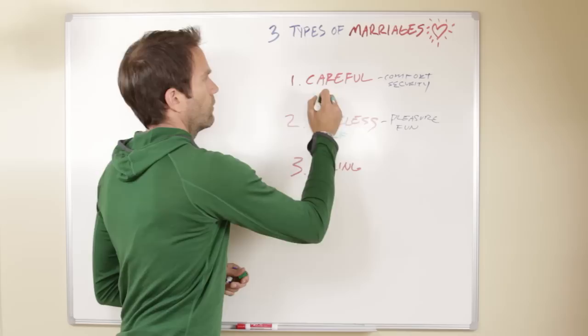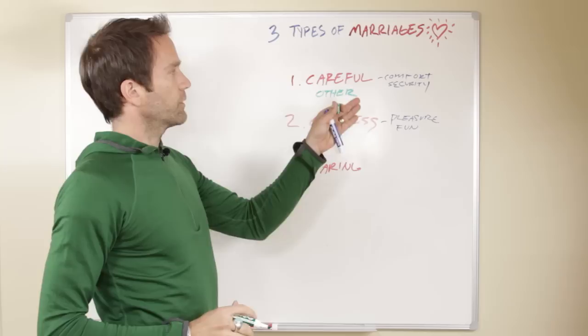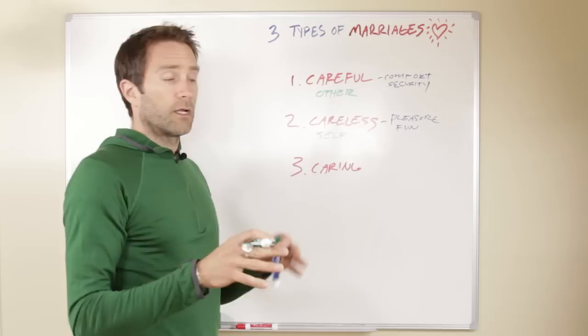Whereas the careful types are focused on the other person. You could see a person that's focused on being comfortable and safe, they're going to look to the other person a lot. It's not safe, it's not safe. Or gosh, can you just stop doing that so that I can be comfortable here?